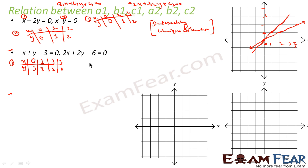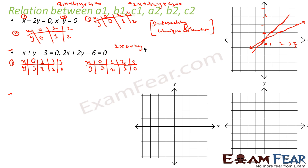Similarly for 2x plus 2y minus 6 equals 0: if x equals 0, y equals 3; if x equals 1, y equals 2; if x equals 2, y equals 1; if x equals 3, y equals 0. I can verify: putting x equals 0 gives 2y equals 6, so y equals 3. Putting x equals 1 gives 2 plus 2y equals 6, so y equals 2. Putting x equals 2 gives 4 plus 2y equals 6, so y equals 1.